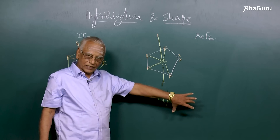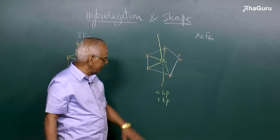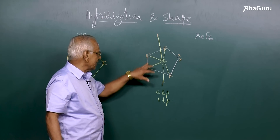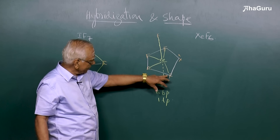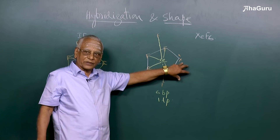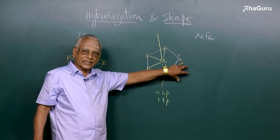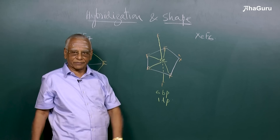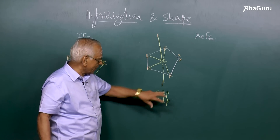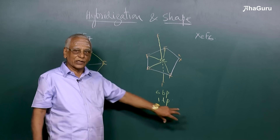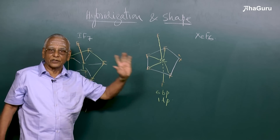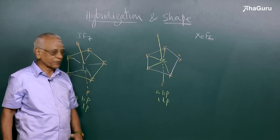In xenon hexafluoride, xenon has eight electrons. Each electron of xenon is shared with one electron of fluorine, and a pair of electrons remains as a lone pair. So around xenon you have six bond pairs and one lone pair. The total number of electron pairs in both cases is seven.